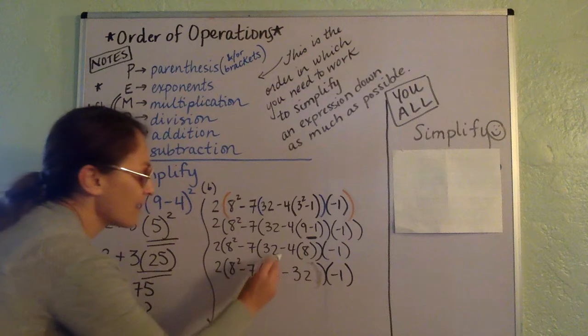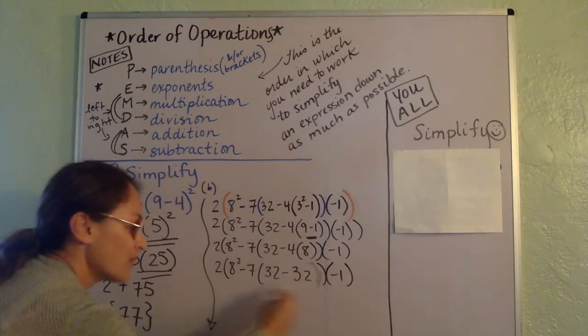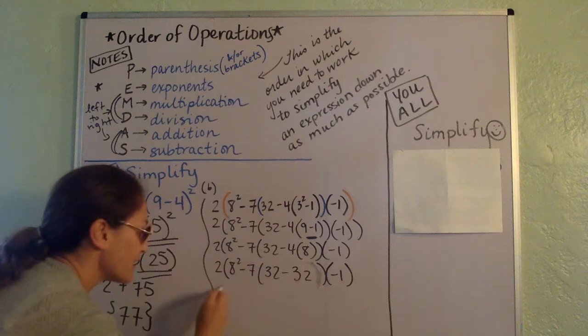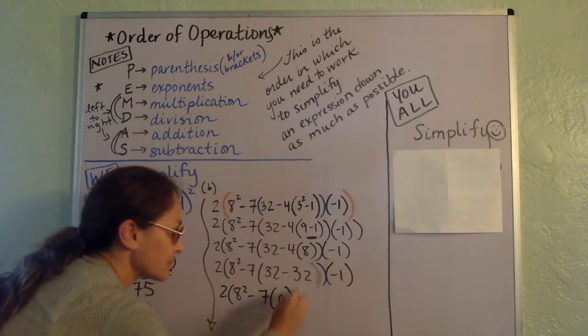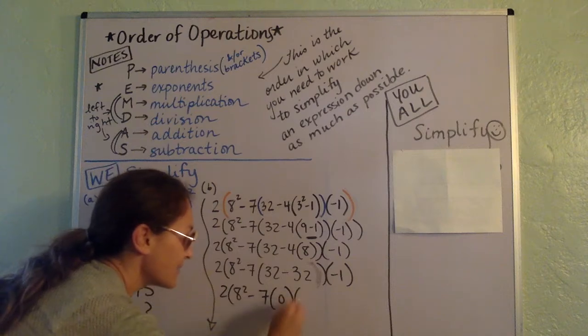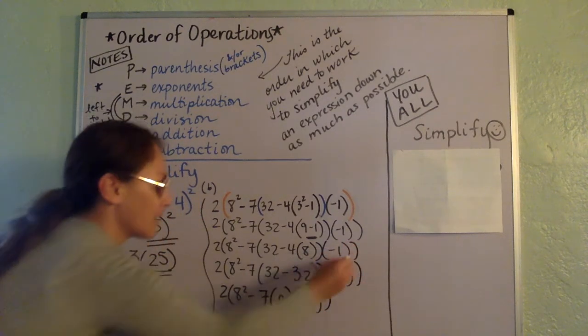And so now we've got 32 minus 4 times 8, which is 32. So within this parentheses, we have a 32 minus a 32. That, of course, is 0. And then times a negative 1. Close, close.